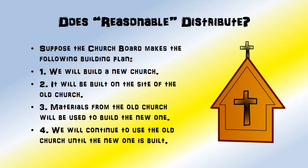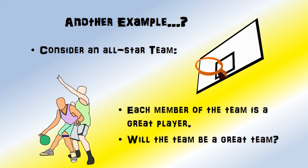Does reasonableness distribute? Suppose a church makes the following plan: we're going to build a new church — that seems reasonable; we'll build it on the side of the old church — reasonable; materials from the old church will be used to build the new one — very reasonable; and we will continue to use the old church until the new one is built — independently, also reasonable. All combined, reasonableness did not combine very well. If you put all these together and think the whole plan is reasonable, you're committing a composition fallacy. And consider an all-star team: if each member is a great player, will the team be great? Not necessarily — you run the risk of the fallacy of composition. Likewise, assuming each member of a great team is automatically a great player runs the risk of a fallacy of division.